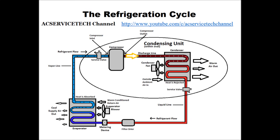As it enters into the condenser coil it starts rejecting heat. As it rejects heat it starts turning into a saturated state in the middle of the condenser coil. A saturated state is where vapor and liquid both exist at the same time. Right after the saturated state where it turns into a complete liquid until it comes out right next to the service valve — that temperature decrease as it's rejecting heat in liquid form is called subcooling.